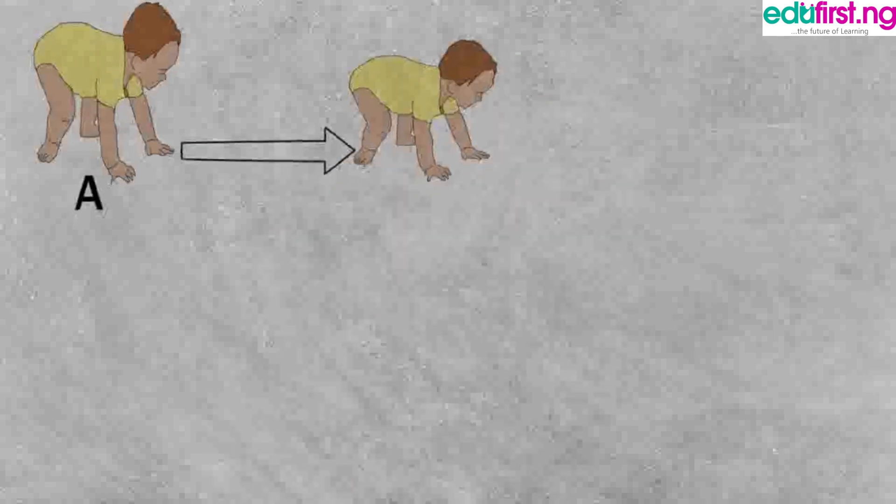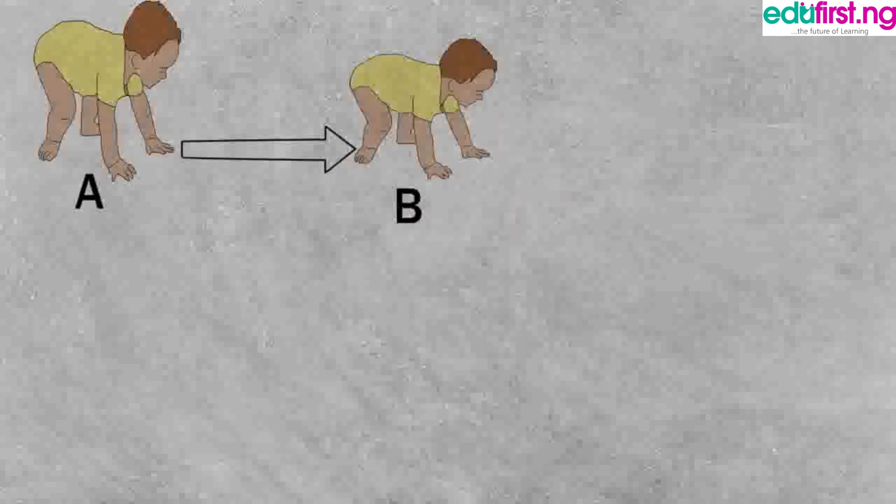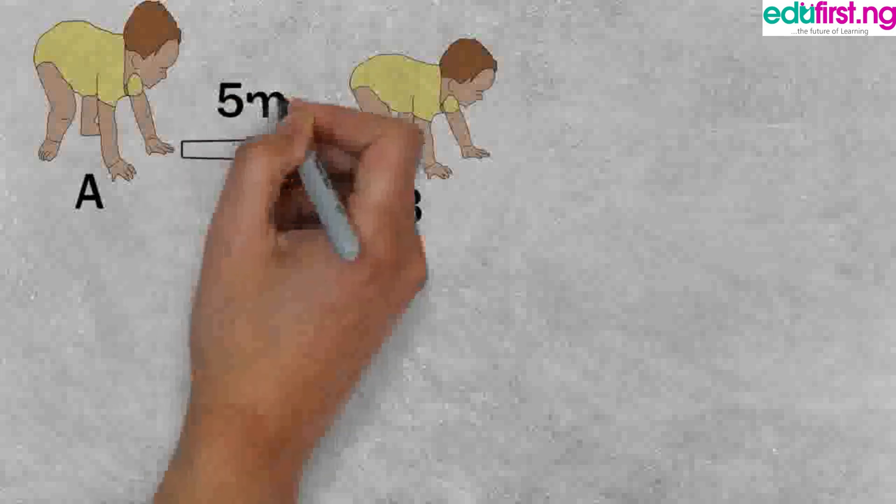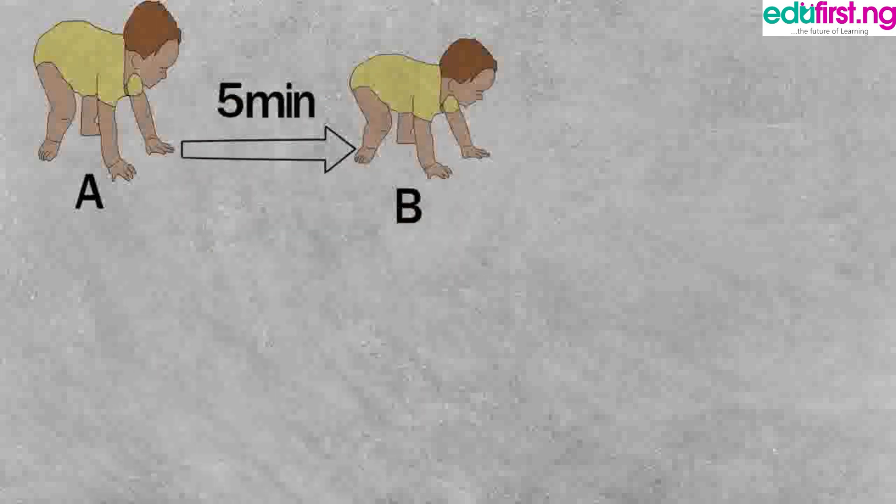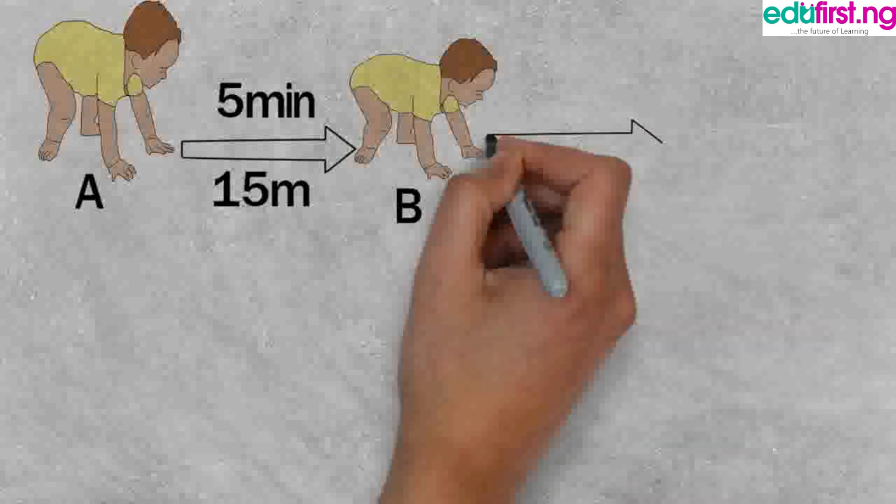Point B is now the position of the baby from its origin, that is the exact point where this baby is now located from its origin at a particular time, which is 5 minutes. This simply means that the baby has moved 15 meters from its origin in 5 minutes.